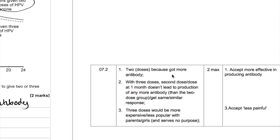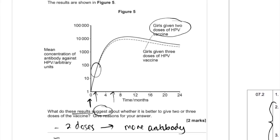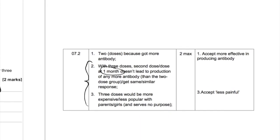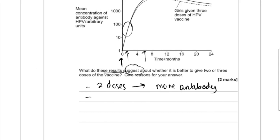Looking at the mark scheme, the first obvious mark is that two doses gives more antibody. The additional marks come from identifying that at one month specifically, the extra dose doesn't lead to the production of any more antibody — you get a similar response. Therefore three doses would purely be more expensive and less popular, but serves no purpose.